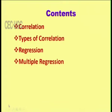Welcome to the UGC CEC program on Neurological Science. In this episode, we are going to discuss correlation and regression — two statistical techniques. The topics for today are: correlation, the types of correlation, regression, and multiple regression. There are many statistical techniques available, and depending upon the type of data, the conditions, and whether it is parametric or non-parametric, these factors decide which technique to use.